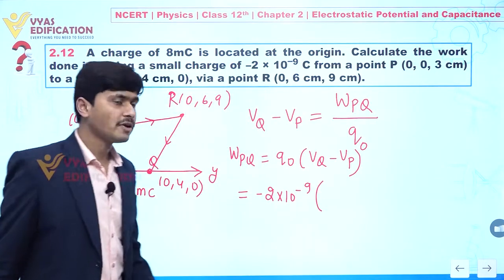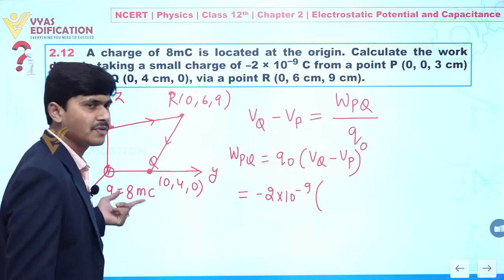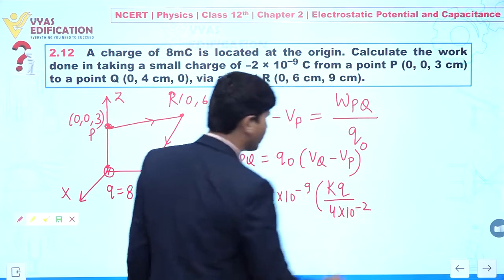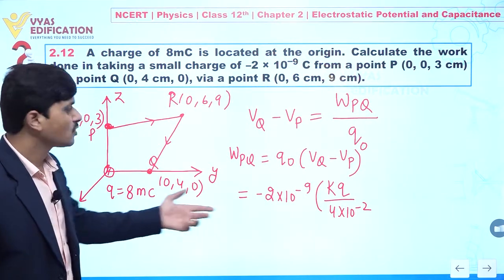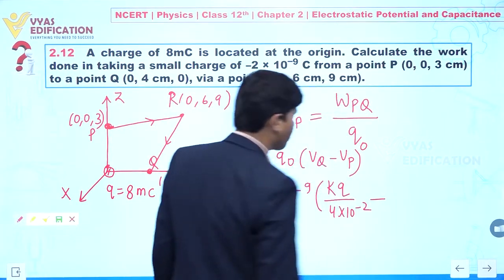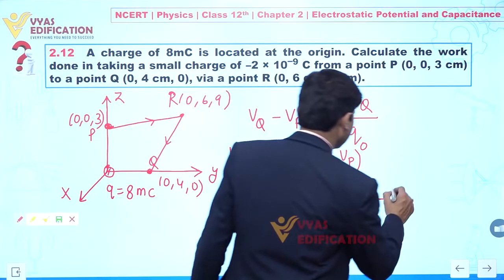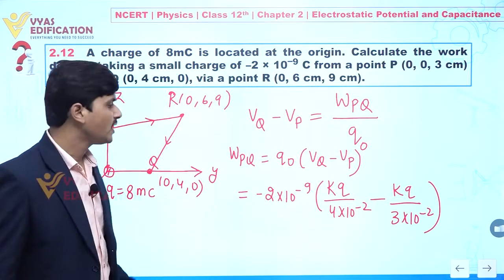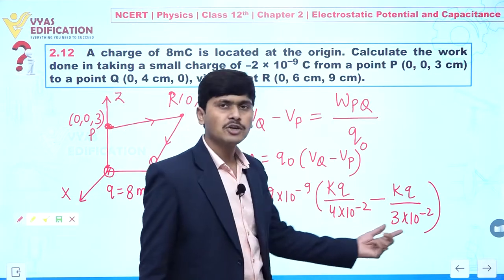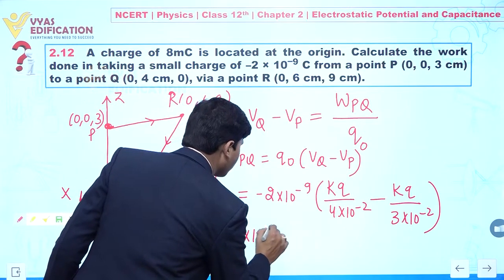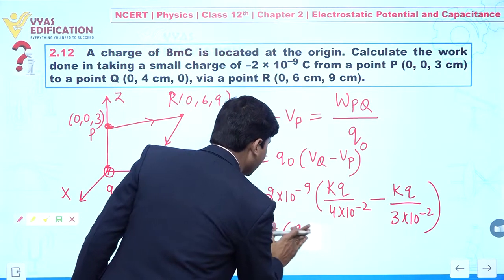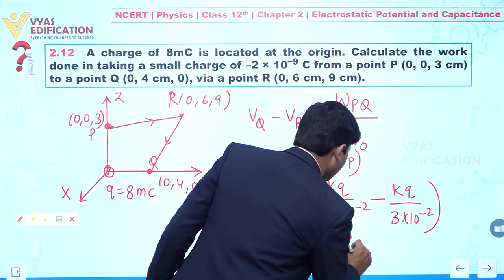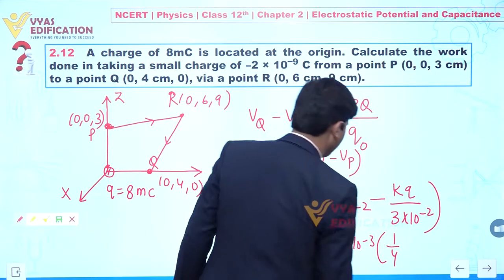The potential at Q due to the charge at origin is given by kQ/r, where r is 4 centimeters, so 4 into 10 to the power minus 2. The potential at P is kQ divided by 3 centimeters, so 3 into 10 to the power minus 2. Taking 10 to the power minus 2 common — it cancels — we get: 2 into 10 to the power minus 7, with k = 9 into 10 to the power 9 and Q = 8 into 10 to the power minus 3. We are left with (1/4 minus 1/3).